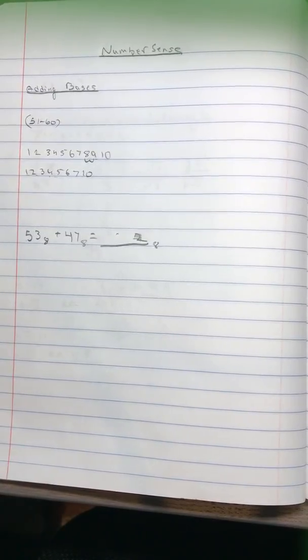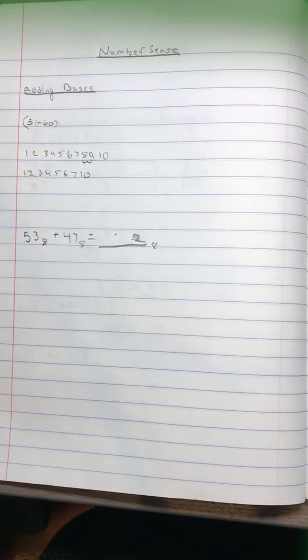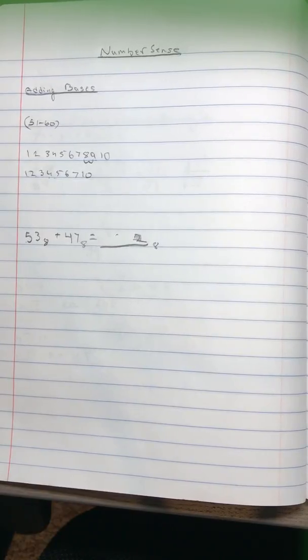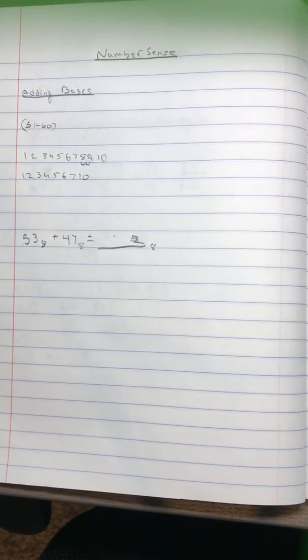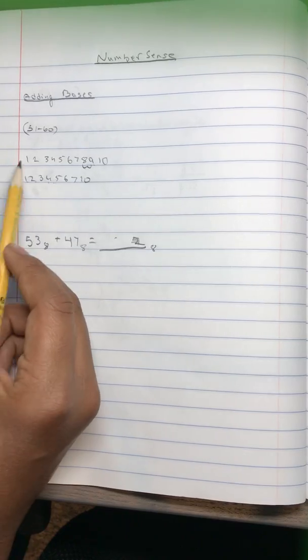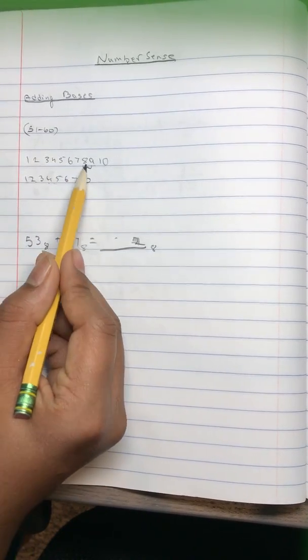Adding bases. To first add bases, we have to figure out how bases work in general. So normal base 10 is what we're all familiar with, works like this: 1, 2, 3, 4, 5, 6, 7, 8, 9, 10.